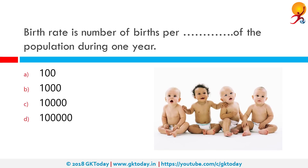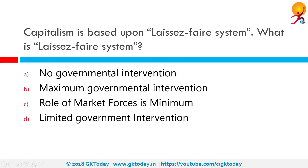Birth rate is the number of births per thousand of the population during one year. Births are usually measured using the birth rate — the number of live births per thousand people. Deaths are measured using the death rate — the number of deaths per thousand people. Migration is the movement of people in and out of an area. The difference between the birth rate and death rate of a country is called the natural growth rate.